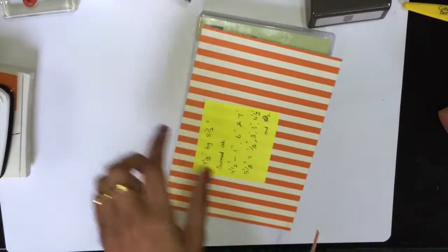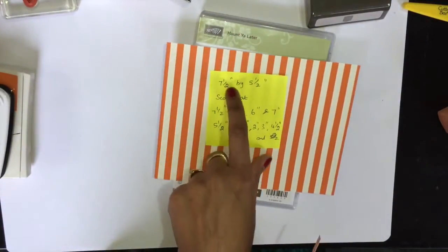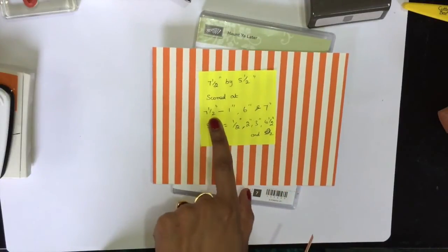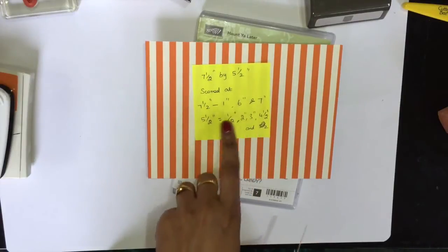We need a cardstock, Happy Haunting designer series paper which measures seven and a half by five and a half. At the seven and a half side, score at one inch, six inch, and seven inch. At the five and a half side, you need to score at half, two, three, and four and a half.